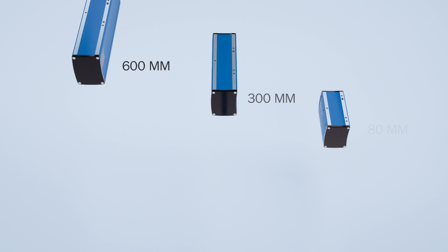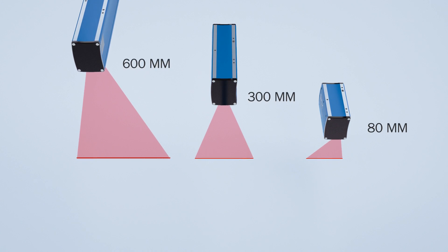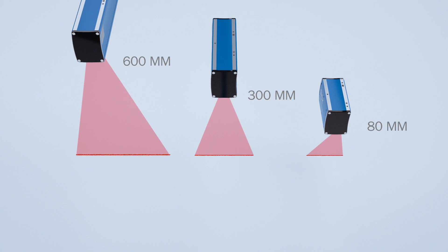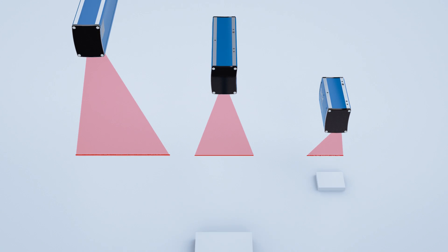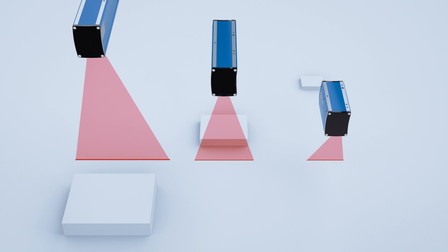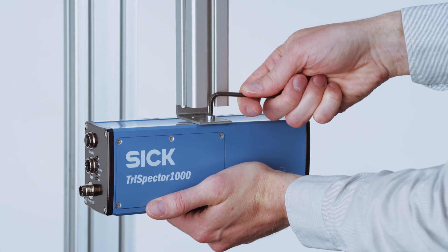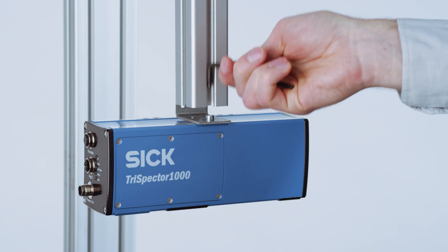TriSpector 1000 is available in three different sizes with three different fields of view. This allows scanning of small to large object sizes depending on your needs. Installation and operation are simple and efficient.